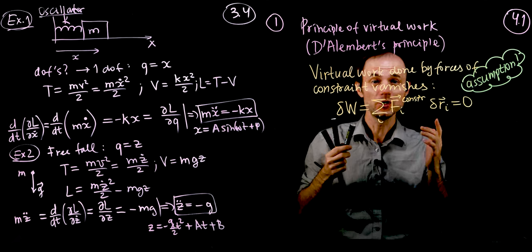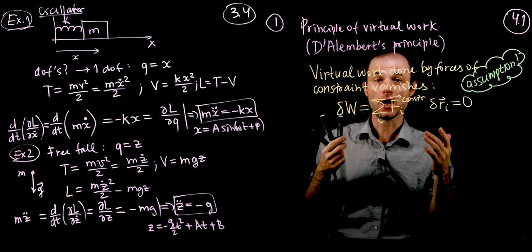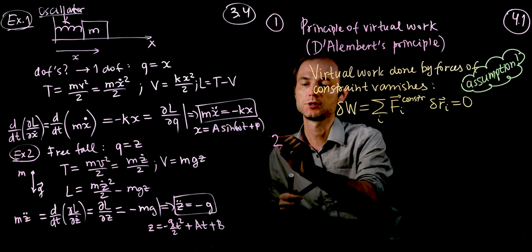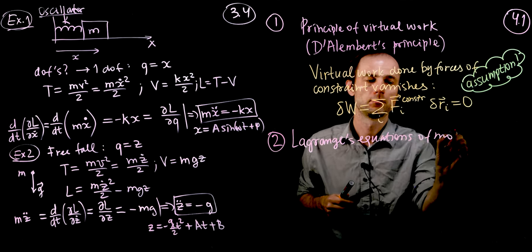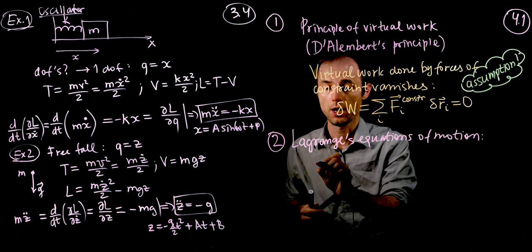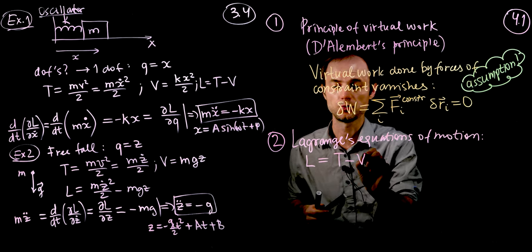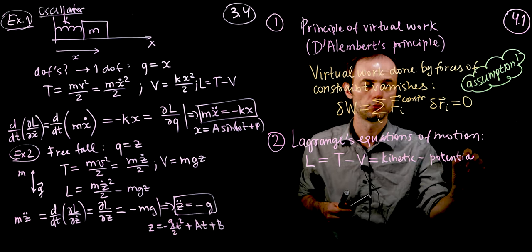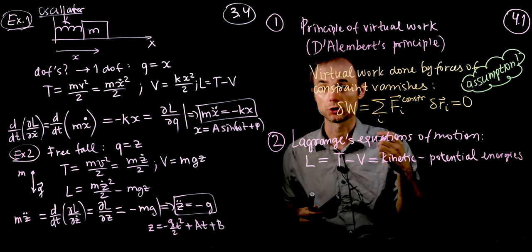When we do that, we can actually derive Lagrangian equations of motion without any forces of constraint being present. This is precisely what we did. After we introduce the Lagrangian — which is the difference between kinetic and potential energy — the equations look like this.